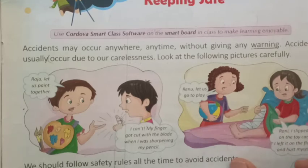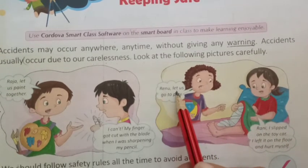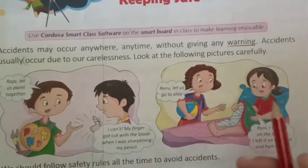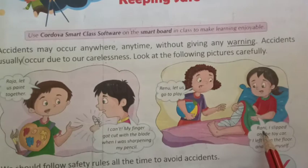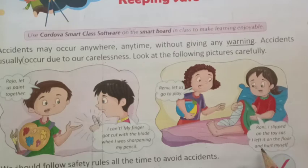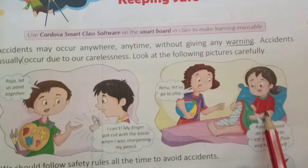Let us see what these two girls are talking to each other. Renu, let us go to play. Renu says, Rani, I slipped on the toy car. I left it on the floor and hurt myself. So Renu had left all her toys scattered on the floor and that is why her leg slipped on it and she got hurt.